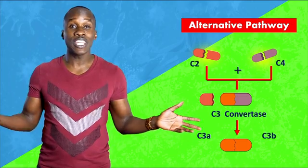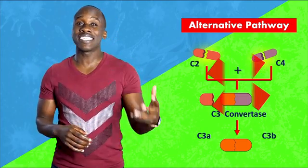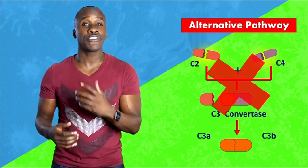The cool thing is, you already know it. It's basically what we just went through, but it skips all the antigen stuff. It skips C1, C2, C4, and it starts with C3. C3 gets activated by binding directly to the pathogen itself.